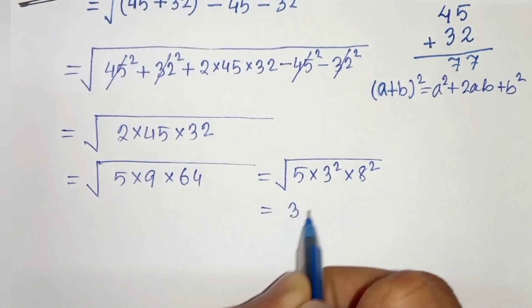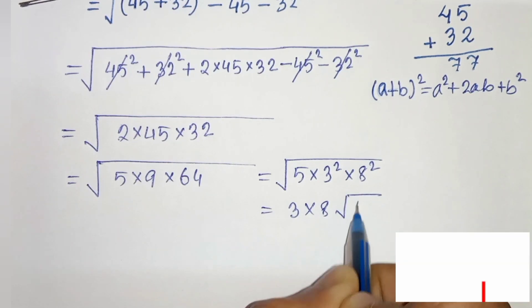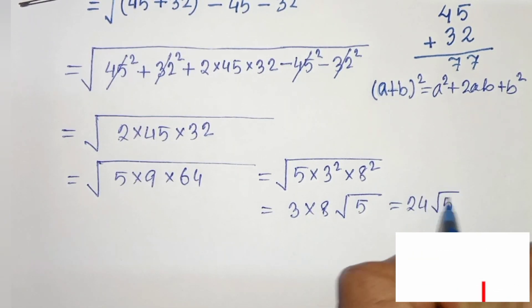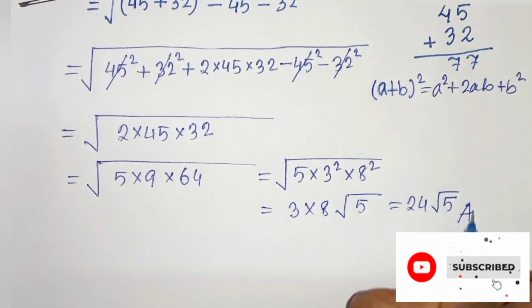In the next step we can take 3 and 8 outside, 3 times 8 root under 5. So 3 times 8 is 24 root 5. So this is our solution. Thanks for watching.